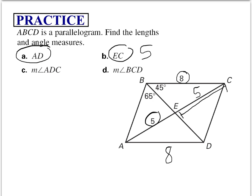Now, for the measure of angle ADC, we know that opposite angles of a parallelogram are congruent. So 65 plus 45 gives us 110 degrees. Therefore, the measure of ADC needs to be 110 degrees.